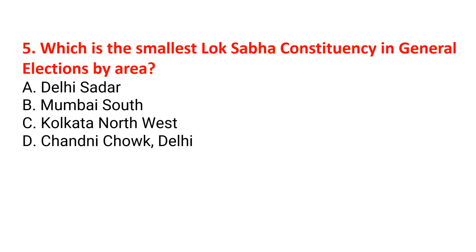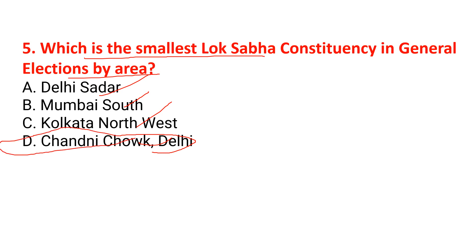Which is the smallest Lok Sabha constituency in general elections by area? Options are Delhi Southern, Mumbai South, Kolkata North-West, and Chandni Chowk Delhi. The correct answer is Chandni Chowk, Delhi, which is the smallest Lok Sabha constituency in general elections by area.